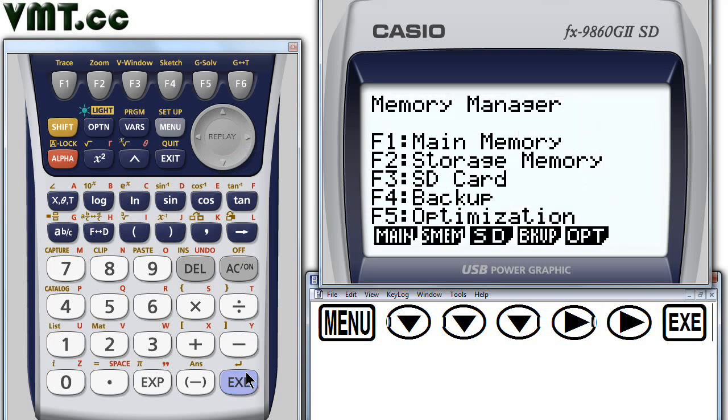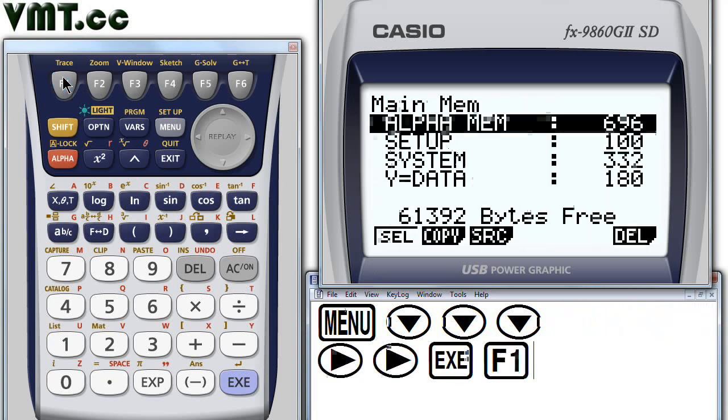Now, access the main memory area by typing F1. We want to select alpha memory. So, type F1 again. Notice there's now a small arrow next to the word alpha. Press F6 to delete all alpha memory.